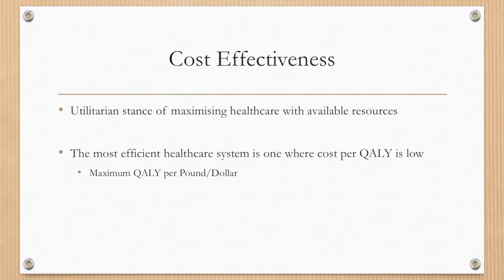So what about the cost effectiveness of quality adjusted life years? It's the utilitarian stance of maximizing healthcare with the resources that are available. The most efficient healthcare system is one where the cost per quality adjusted life year is low, and therefore we can maximize the number of quality adjusted life years per pound or per dollar.